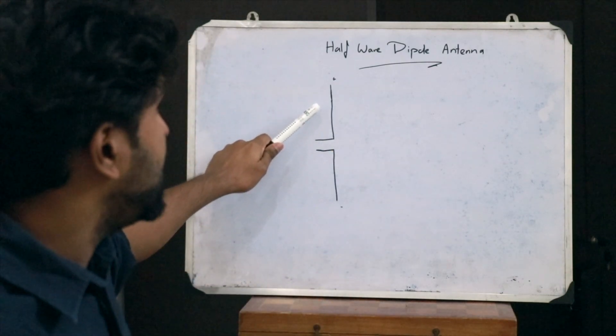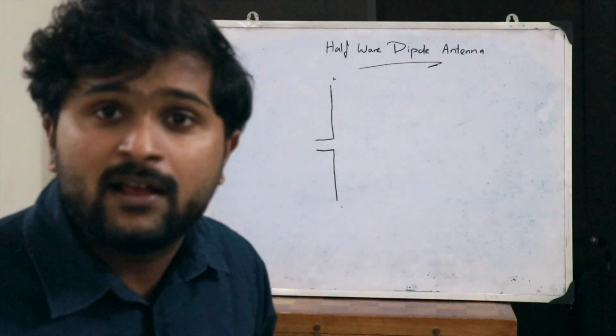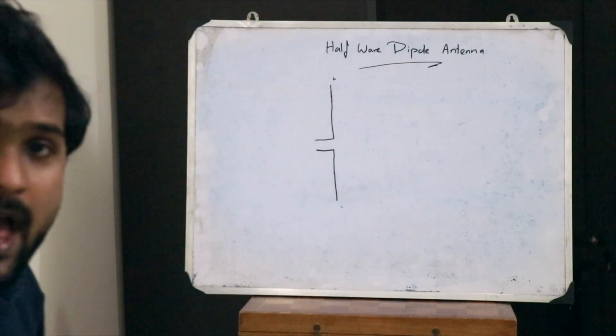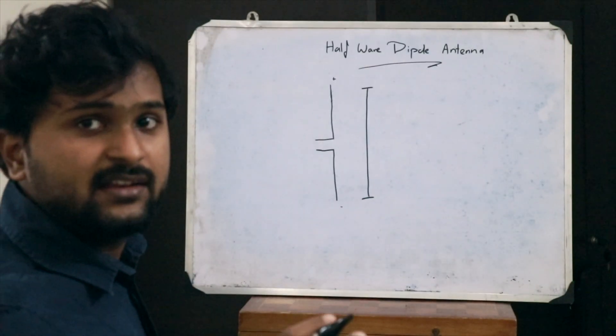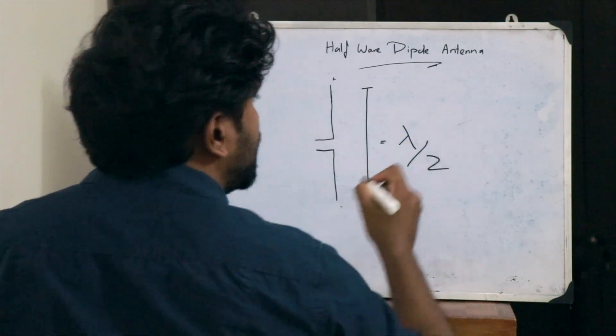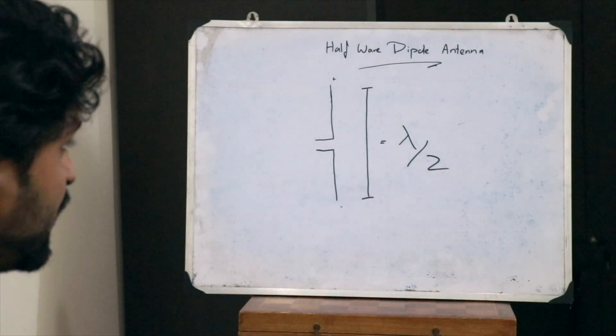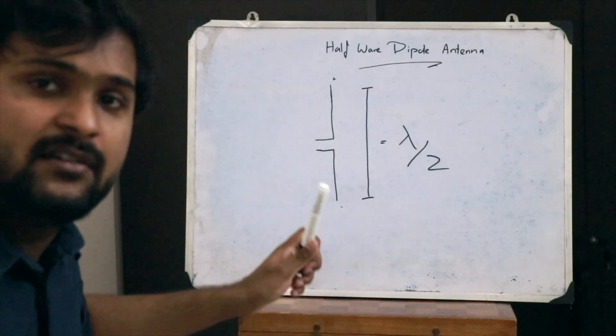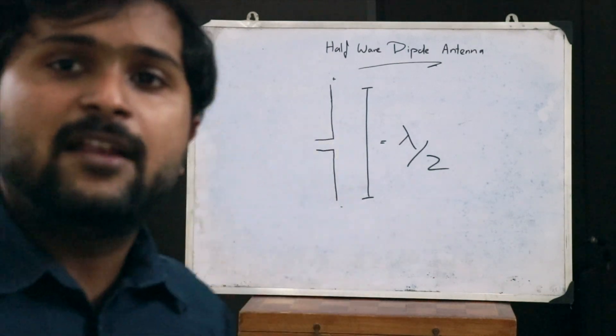When is this dipole said to be a half-wave dipole antenna? This dipole antenna is said to be a half-wave dipole antenna when the overall length of the antenna is equal to lambda by 2 — that is, when the length equals half of the wavelength generated by the antenna, just like the name suggests.